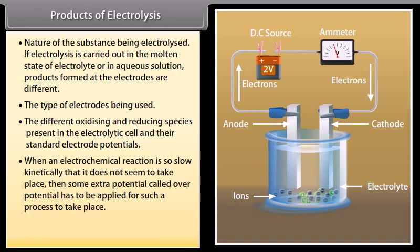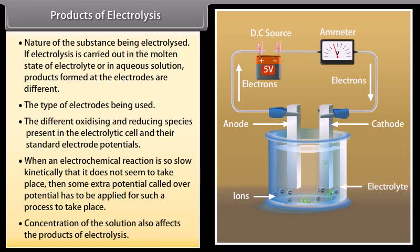The different oxidizing and reducing species present in the electrolytic cell and their standard electrode potentials. When an electrochemical reaction is so slow kinetically that it does not seem to take place, then some extra potential called over potential has to be applied for such a process to take place. Concentration of the solution also affects the products of electrolysis.